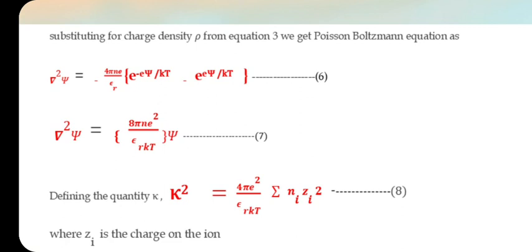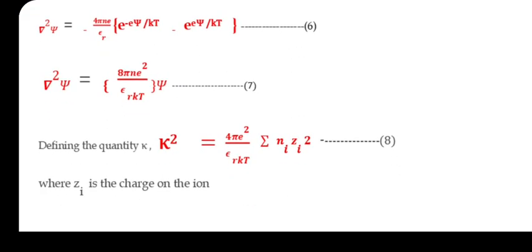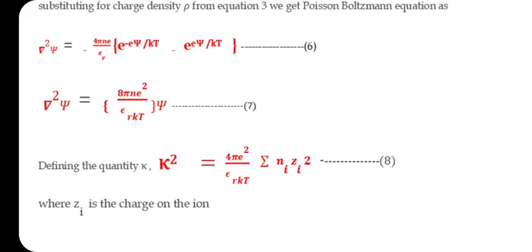Defining the quantity kappa, this is equal to (4πe²/εRkT)·Σ(NiZi²), where Ni is number of molecules per unit volume and Zi is the charge of the ion.